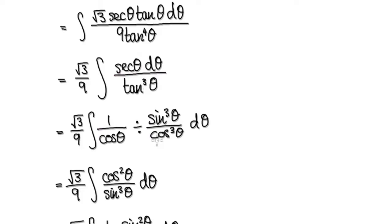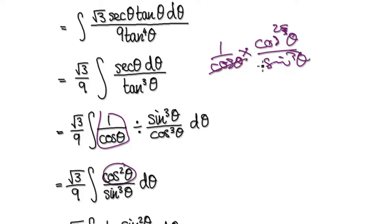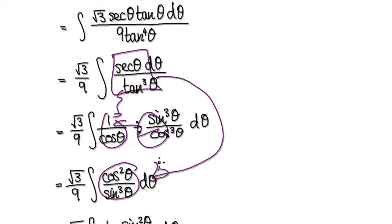And then tan to the power of 3 is sine to the power of 3 over cos to the power of 3. So now tidy this up — this stays the same. And then you times the reciprocal of the second fraction: cos to the power of 3 theta over sin to the power of 3 theta. And then this will become squared. It cancels out with this, and then you've got your sin to the power of 3. So whenever you have a mixture of secant and tan, break it up into its simplest form, tidy up, and that will then give you this. So from here, that will then take you to here.